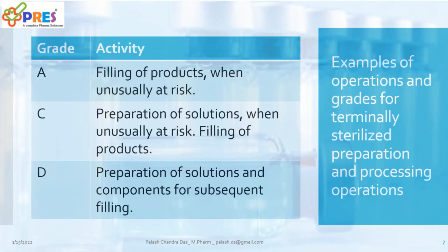This is a summary of all the grades discussed: Grade A zone is used for filling a product when at unusual risk — though I recommend filling in a Grade A zone with a Grade C background. Grade C is for preparation of solution when at unusual risk, and filling of products can also be done in Grade C. Grade D is for preparation of solution and components and subsequent filling, which is allowed, though Grade C can be chosen for better control.